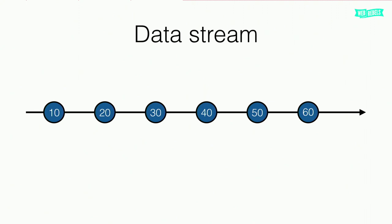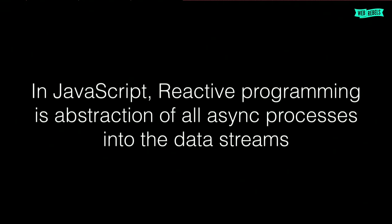It looks like this: an endless data stream of numbers starting from 60, 50, 40, and so on. In JavaScript, reactive programming is an abstraction over all async processes that we have, into a data stream. That sounds really nice — most things in JavaScript are async, and people write a lot of code to handle that. If you could use one API for handling all async processes, that would be really awesome.